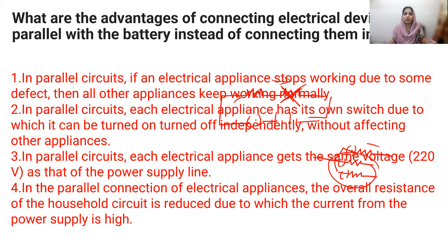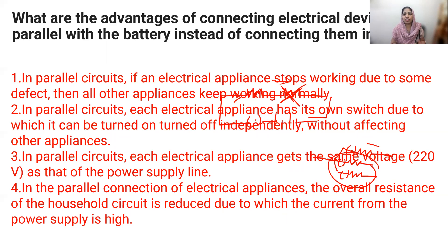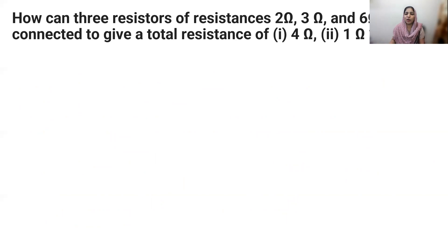In a series connection there is a lot of resistance, so the current drawn from the supply voltage is affected. For a domestic electric circuit, a parallel connection is used. However, in parallel the overall resistance is lower, so the current taken from the supply will be higher.